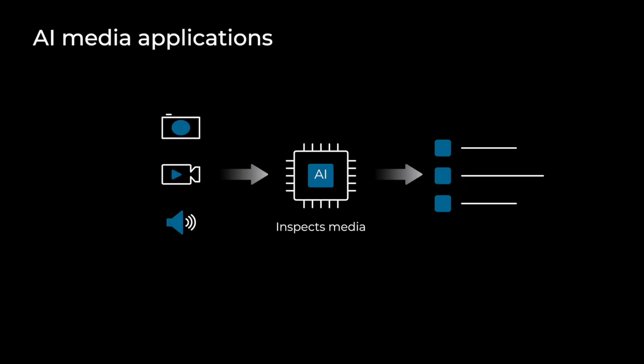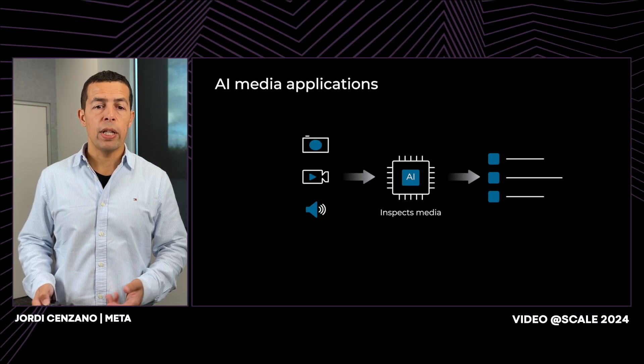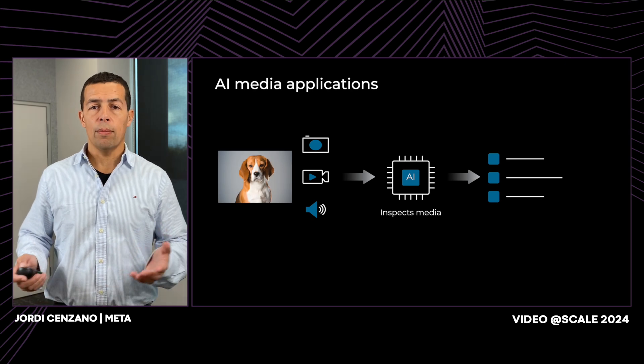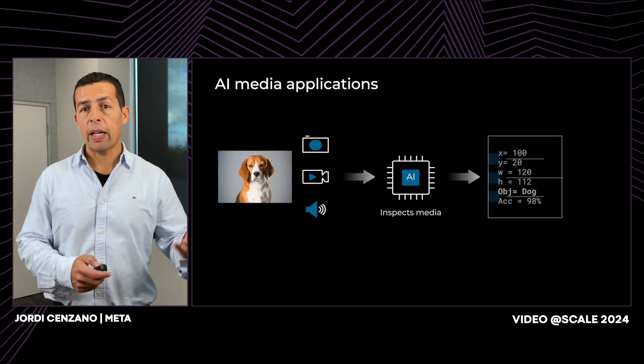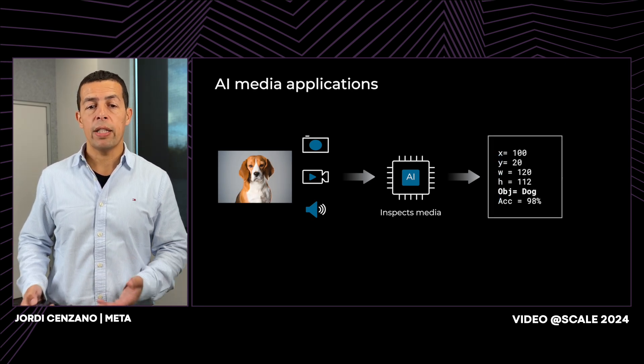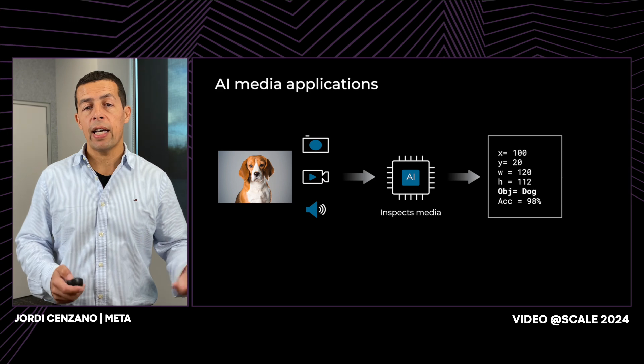Now let's start talking about how AI and media has been used in the recent years. AI is not new in the media space. Since a few years ago, we started using AI models to inspect media. For instance, there are models that can inspect an image or a video and tell us what is in that content.